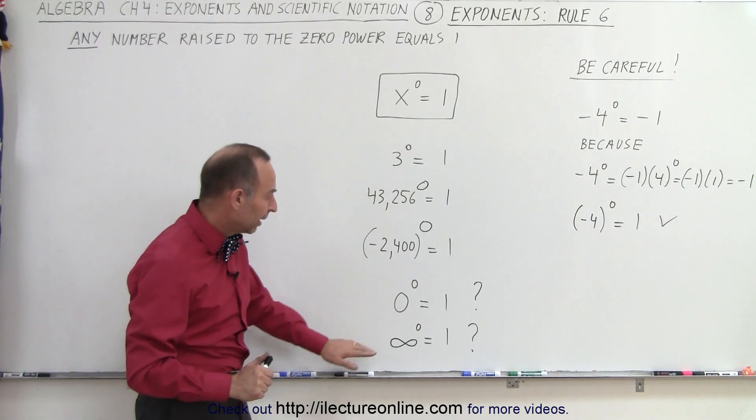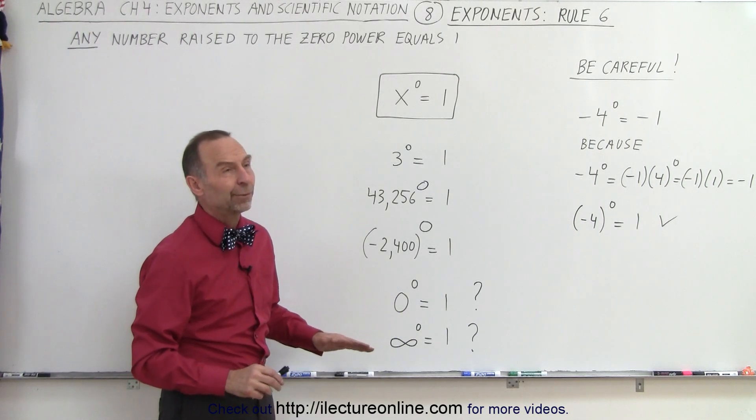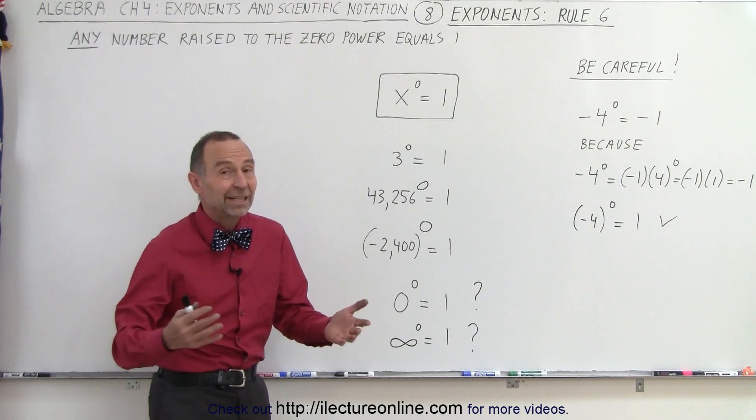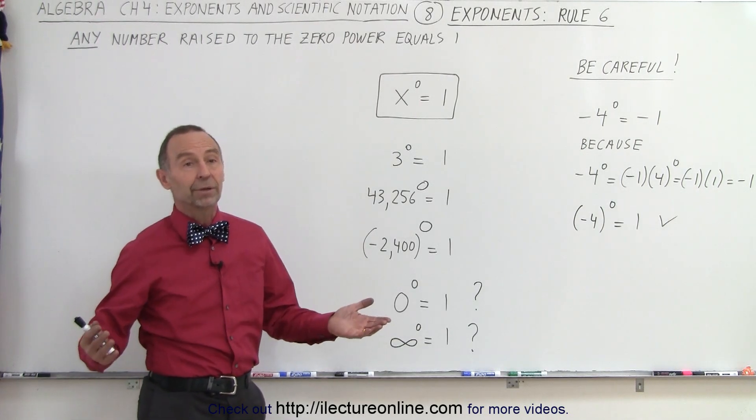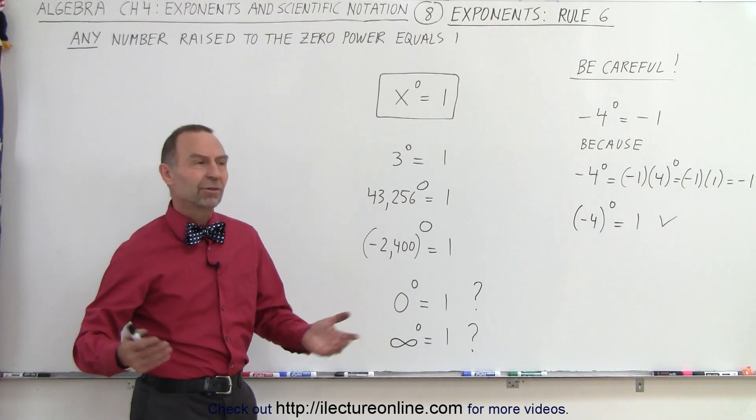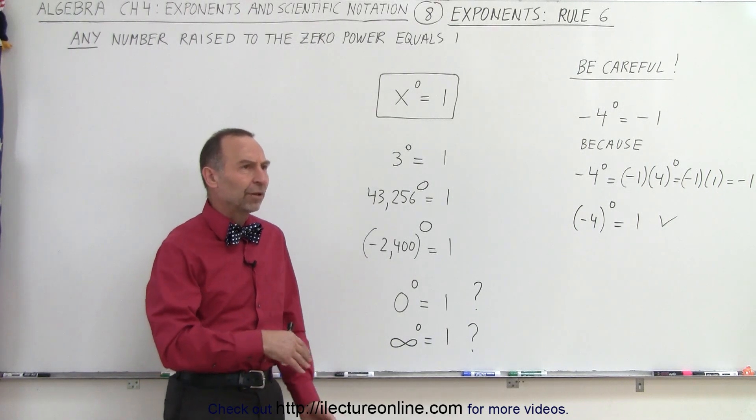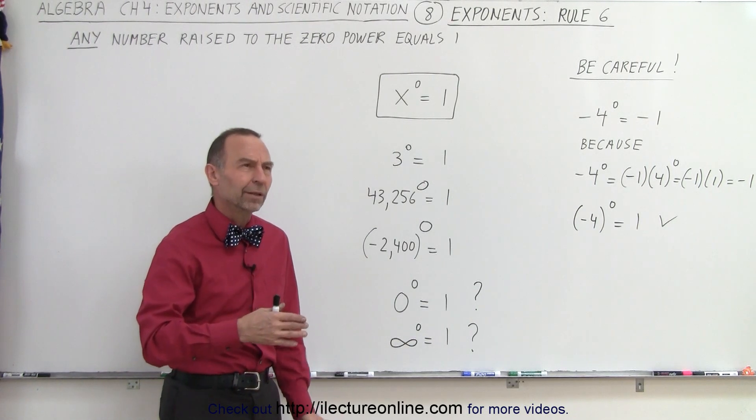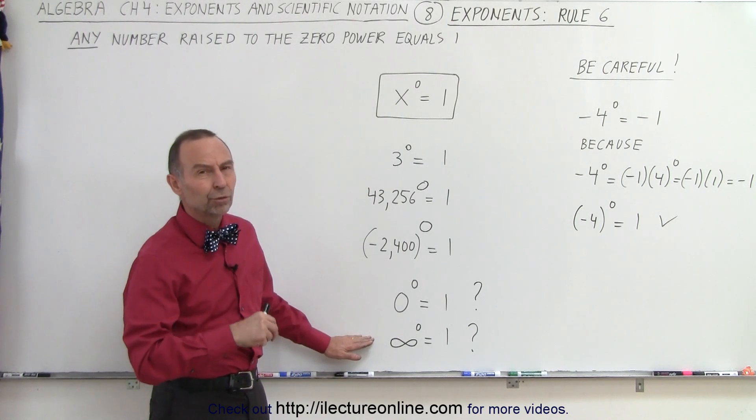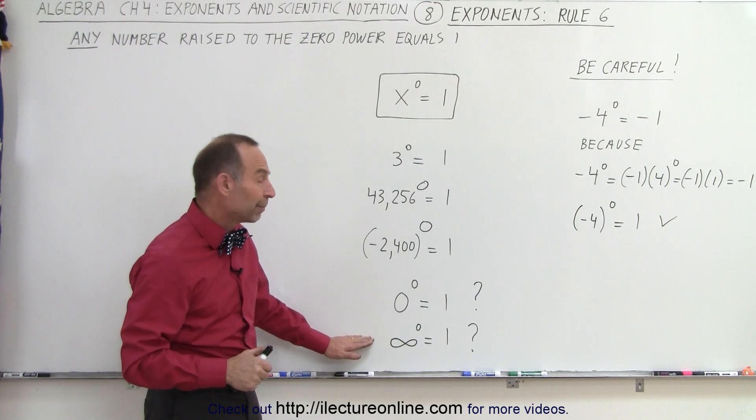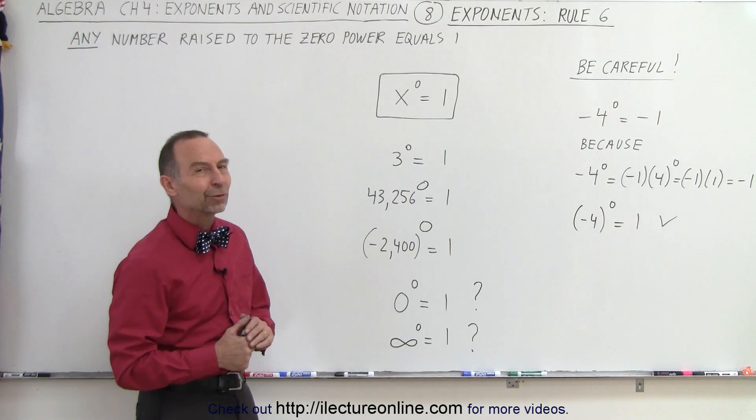And we'll look at it closer later. And infinity to the 0 power, well, that's a little bit more difficult to work with, because infinity is not a real number. It's undefined. So you take something that's not defined and not raised to the 0 power, why would that equal 1? So that might be a little bit more difficult to prove or a little bit more difficult to accept. But anyway, we'll take a look at those closer.